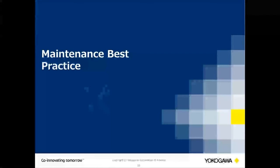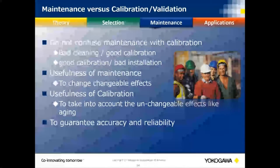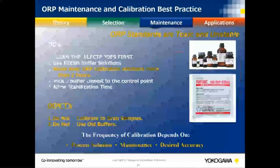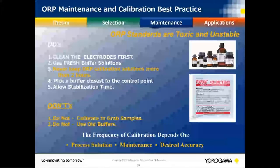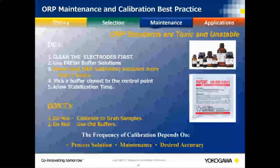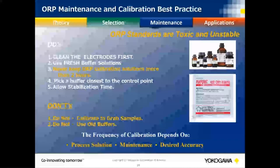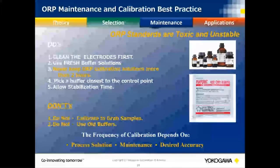Now for maintenance and calibration — the fun part. Calibration and validation are different. If we don't have good cleaning, we won't have good calibrations. Always start with cleaning. Known best practices include: clean your electrodes first, use fresh buffer solutions, never keep ORP calibration solutions more than two hours as they're not stable and can get contaminated quickly.